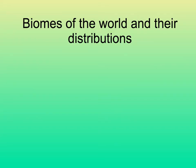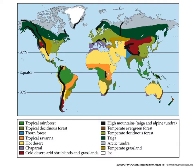Let's look at where these biomes occur. On this map from our book, each biome is drawn in with a different color. The high mountain regions are shown in black, and on those high mountains you would find both taiga and alpine tundra.